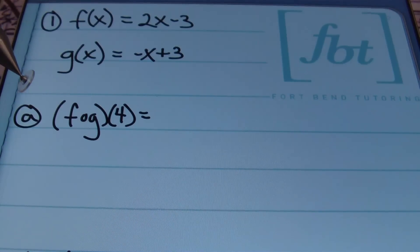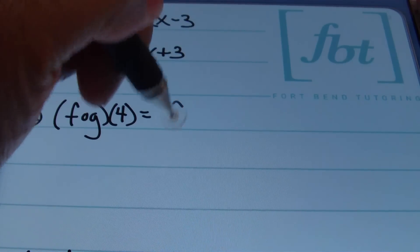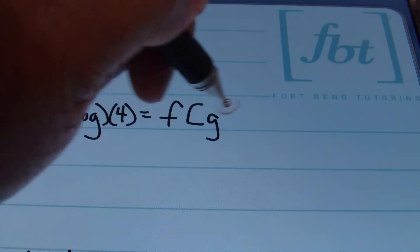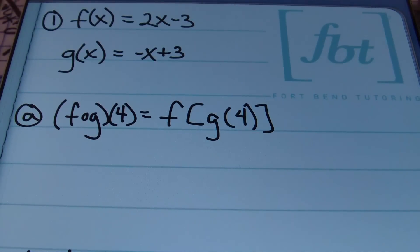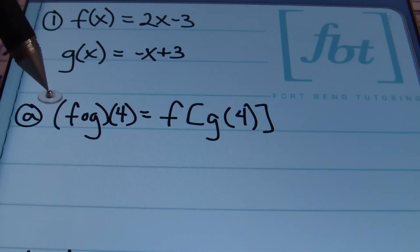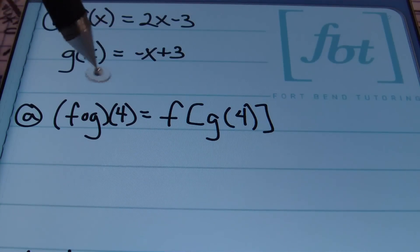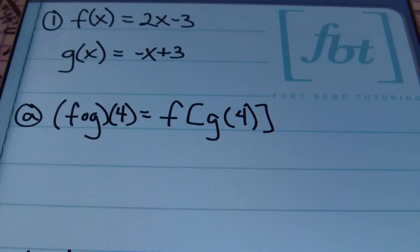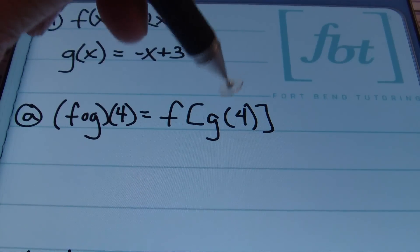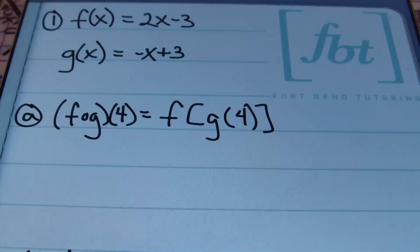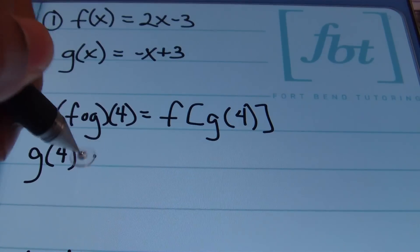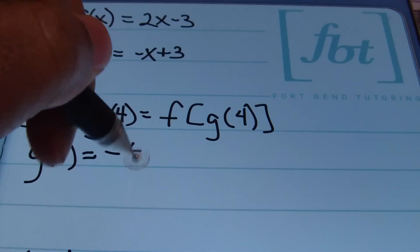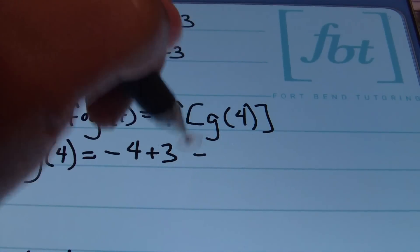In problem 1A, they want us to find F composite G of 4, which means F of G of 4. You start from the right and work your way to the left — place 4 in G, take that result, and place it within F. I'll start by finding G of 4, replacing every X in G with a value of 4. This becomes negative 4 plus 3, which gives a value of negative 1.